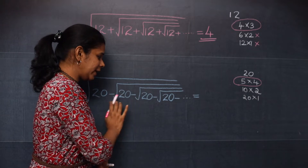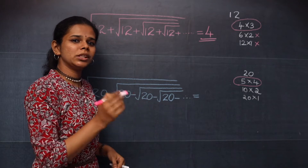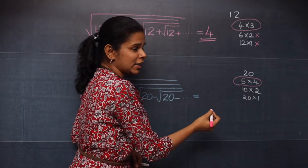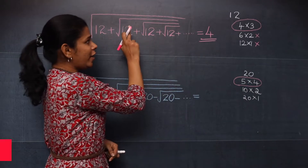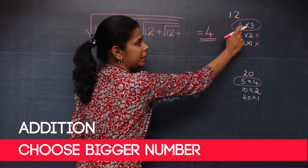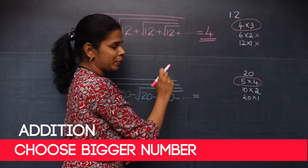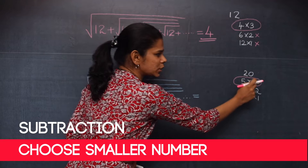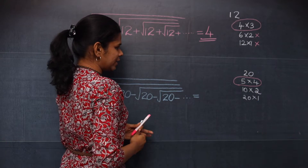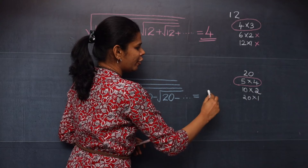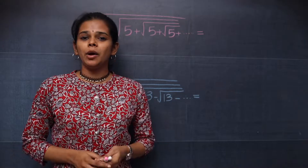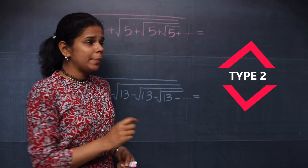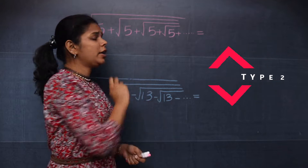Since you have a subtraction sign here, you will choose the smaller number from the pair of factors. When you have addition you choose the bigger number, but when you have subtraction you choose the smaller number. So your answer will be 4.